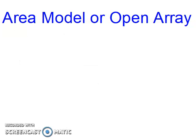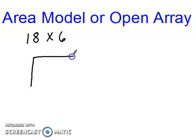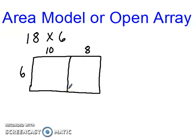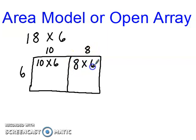We're going to do one more example: 18 times 6. We have 6 on the side — 18 is bigger than 6, but not by as much as 53 is bigger than 7. I'll decompose 18 into 10 and 8. Notice 10 and 8 are close to the same size, so I'll try to make the 10 section look a little bigger than the 8 section so the model matches the equation.